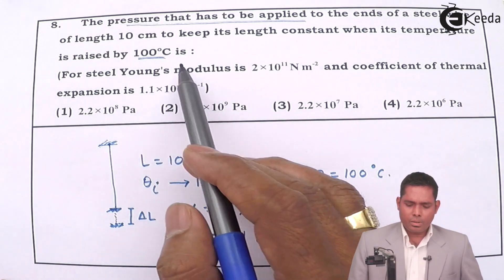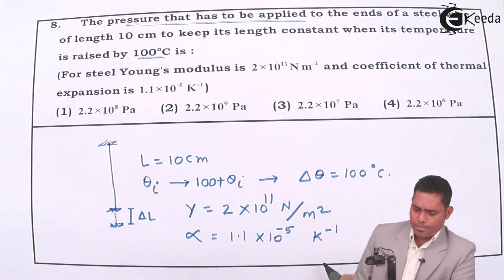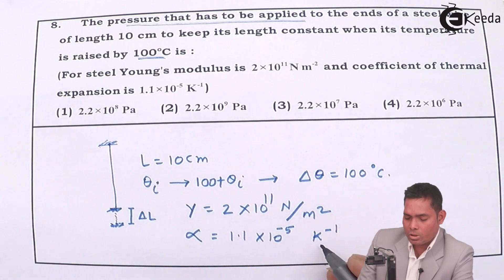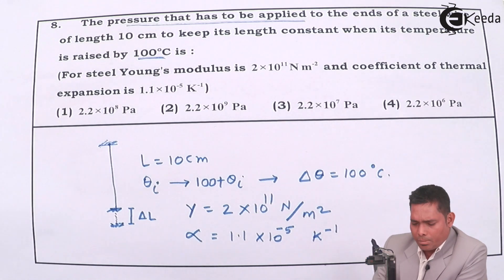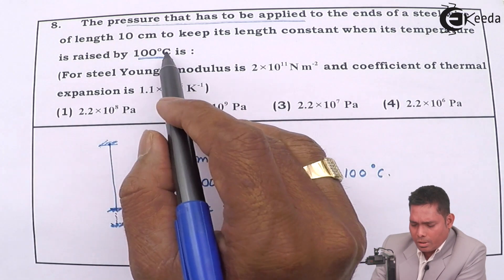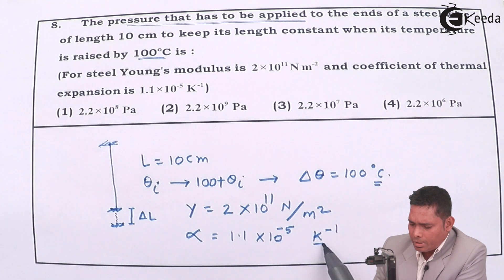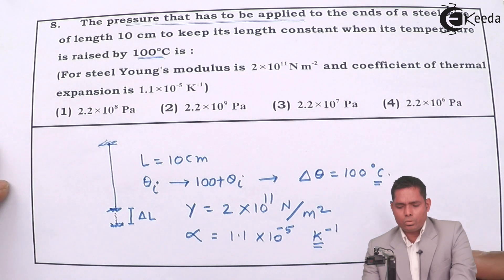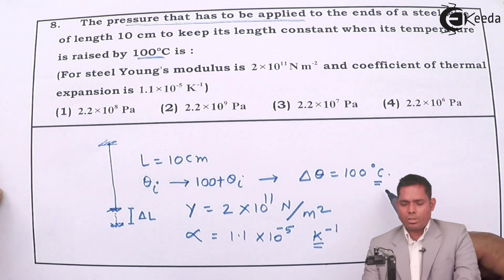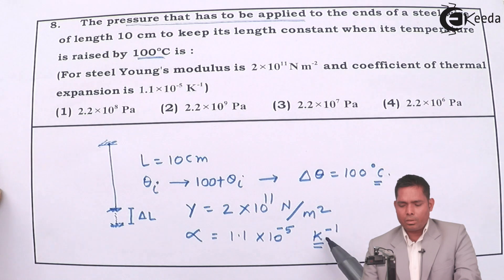Whether the unit is K⁻¹ or °C⁻¹ makes no difference, because we are interested in the change in temperature, and a change of 1 kelvin equals a change of 1 degree centigrade, so it will not affect the result.